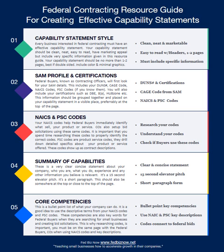You need to have your DUNS number, which you would have gotten when you set up your SAM profile. You'll have your certifications on there — if you're a WOSB, a veteran, HUBZone, or 8A, any of those that pertain to your business. You should also have your CAGE code, which comes from SAM. CAGE codes are assigned to you by the federal government and everyone has a different one.